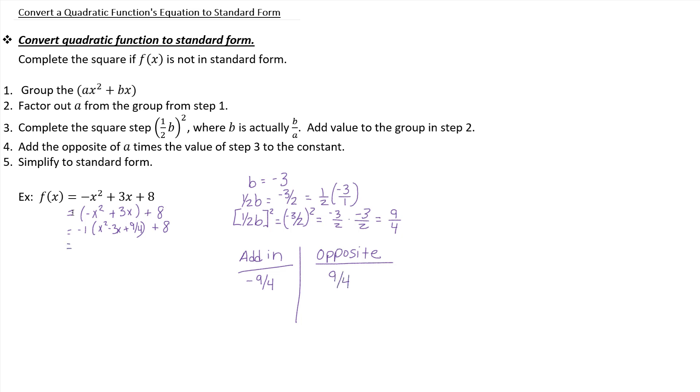That's our next step. We're going to take what we have and just rewrite it, but we want to add that 9 fourths to our constant at the end. That way, it really means that if we add in negative 9 fourths and 9 fourths, we added in 0. We didn't change anything. We just changed the look.